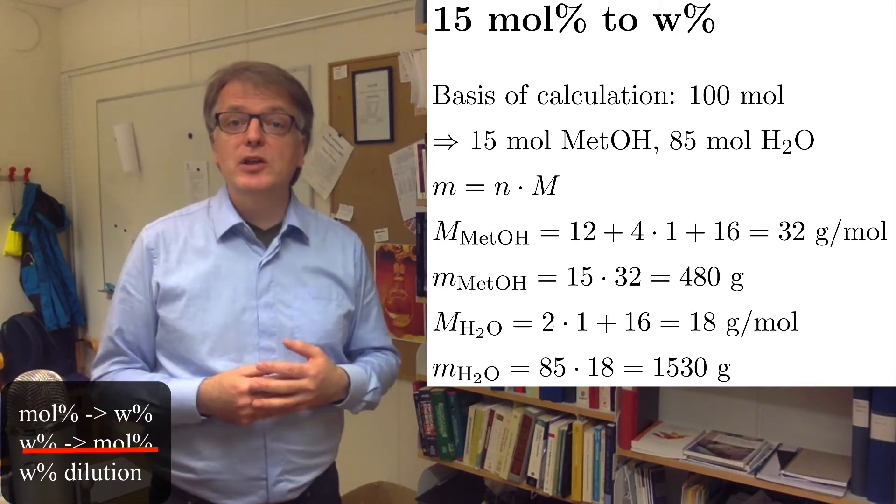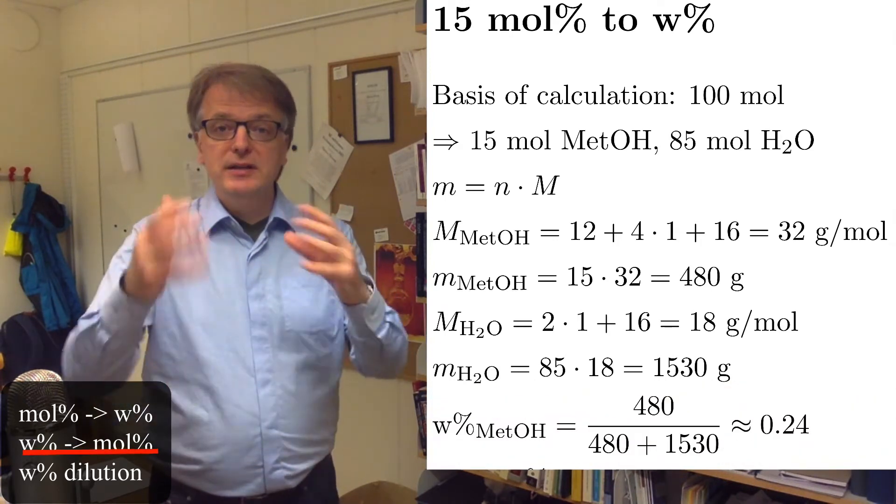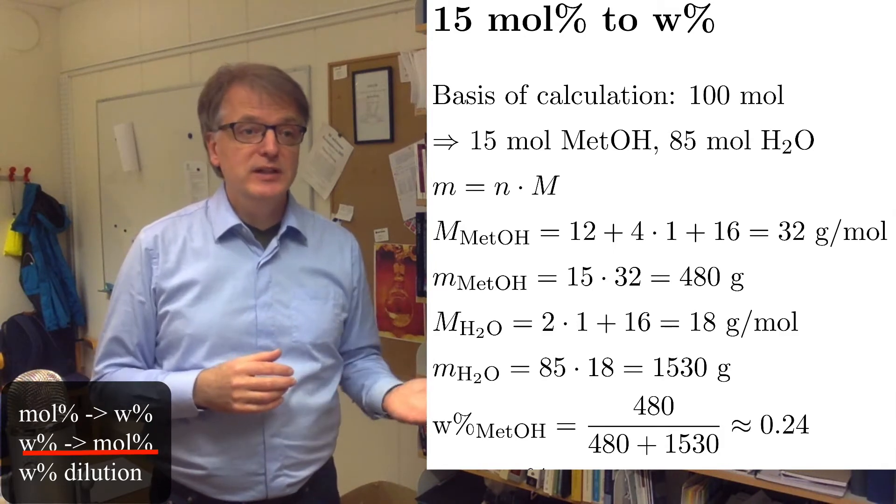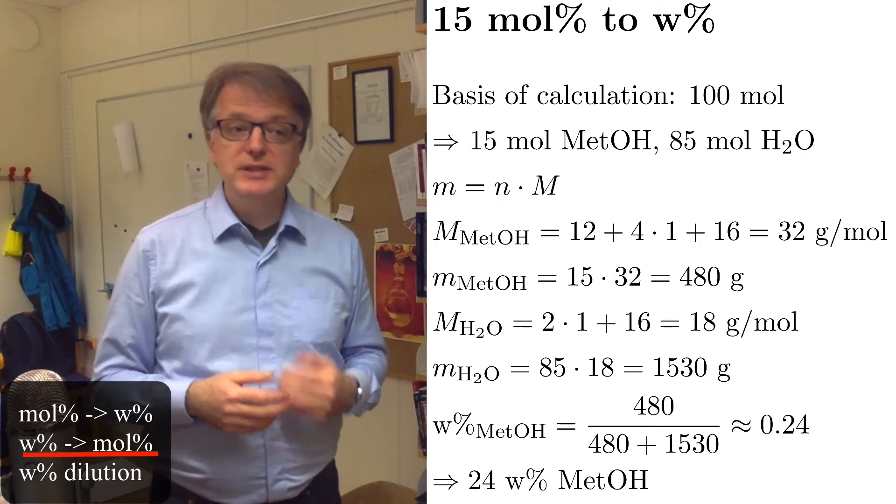And now we can calculate the weight percentage as the weight of the methanol, 480 grams, divided by the total weight, 480 plus 1530, and we get approximately 24 weight percent.